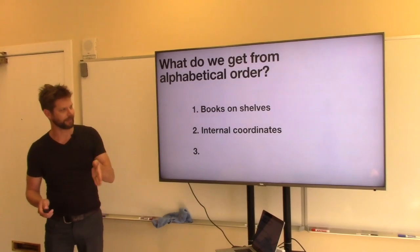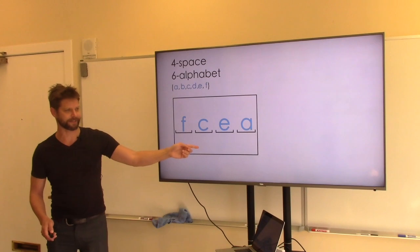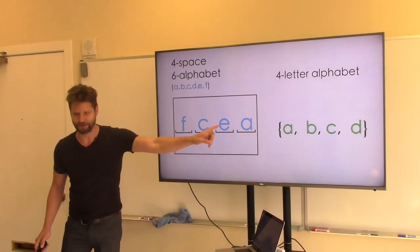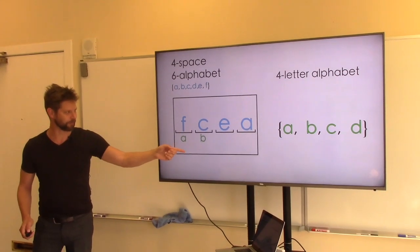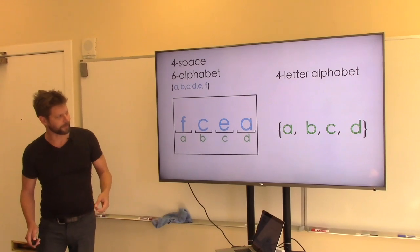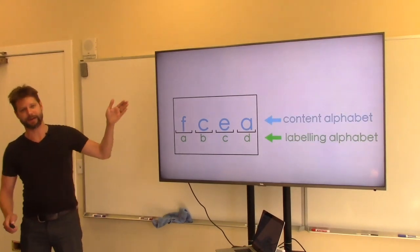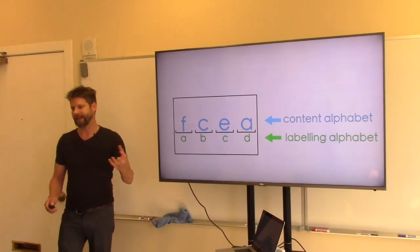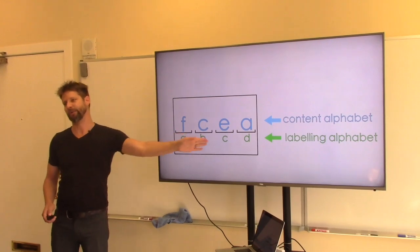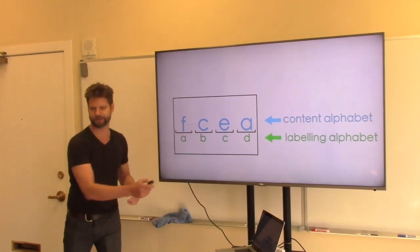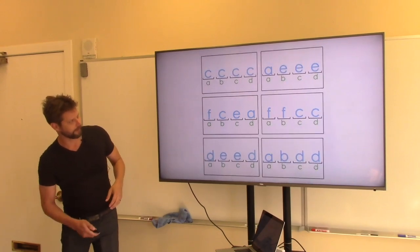The second thing we get is an internal coordinate system — not just organizing books relative to others in the same collection, but a labeling system for the contents of each book. A four-space book has spaces presented in order, and I have a set of four ordered elements to use as a labeling system: the first space, the second space, and so on. We now have two alphabets associated with each book: the content alphabet, indelibly printed into the page, and the labeling alphabet, which is something we've imposed.